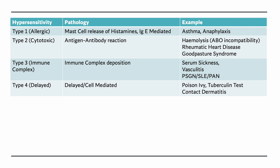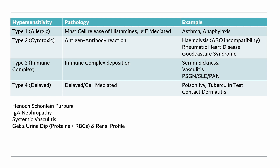Let's focus on the rash seen earlier, which is classical of Henoch-Schönlein Purpura (HSP). In HSP, you get a rash on the posterior or extensor aspect of the buttocks, legs, and feet. Remember that Henoch-Schönlein Purpura is synonymous with IgA vasculitis. It affects the kidneys, so you need to get a urine dip looking for red blood cells and protein — you are looking for glomerulonephritis — and get a renal profile.